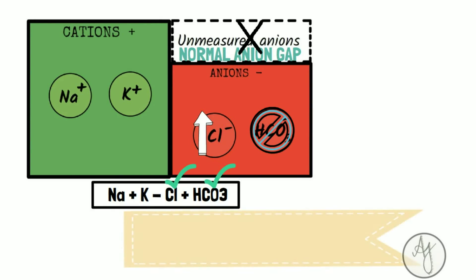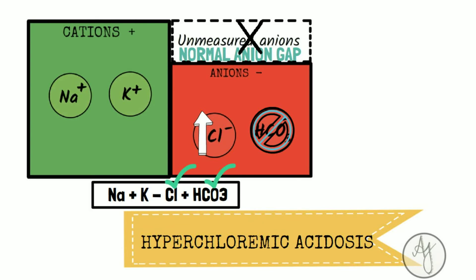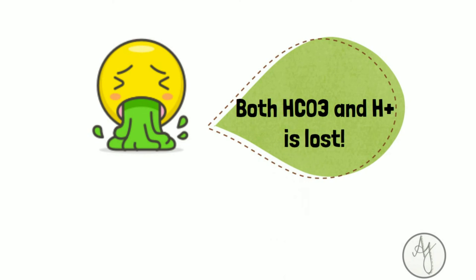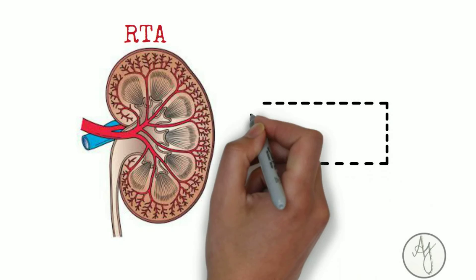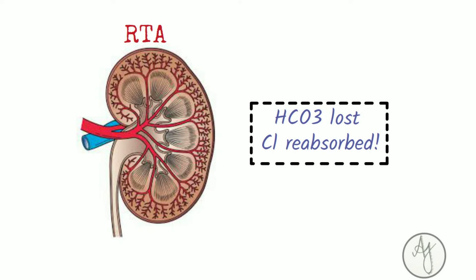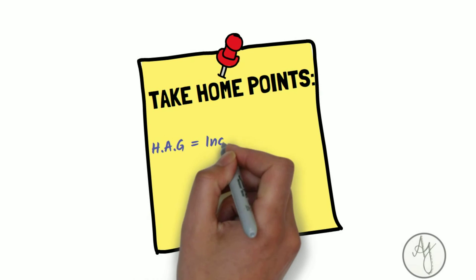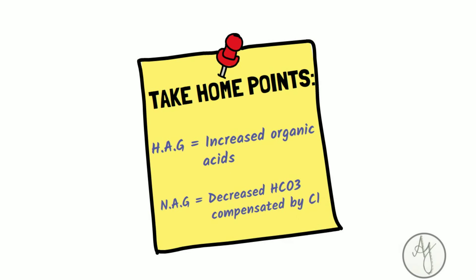This is called hyperchloremic acidosis because the loss of bicarb is compensated by increased chloride, keeping the anion gap normal and the serum electroneutral. In vomiting, both bicarbonate and H+ are lost, not just bicarbonate — which is why the anion gap behaves differently. Similarly, in renal tubular acidosis, bicarbonate is lost so chloride is increasingly reabsorbed. To summarize: high anion gap means increased organic acids; normal anion gap means decreased bicarbonate compensated by increased chloride. Normal anion gap is 8 to 16 mEq/L.